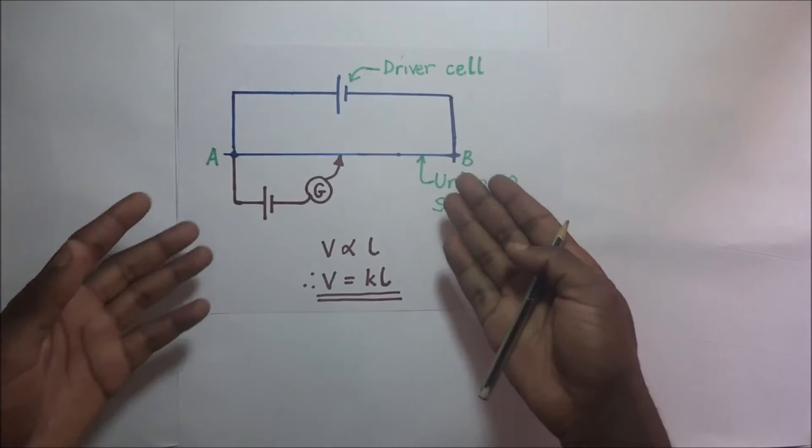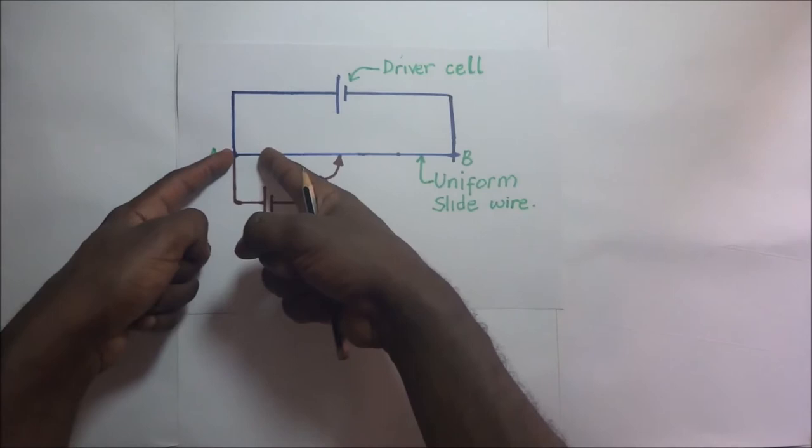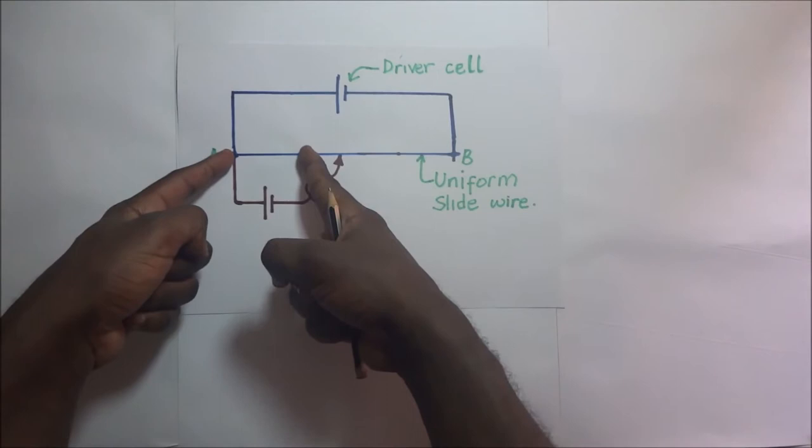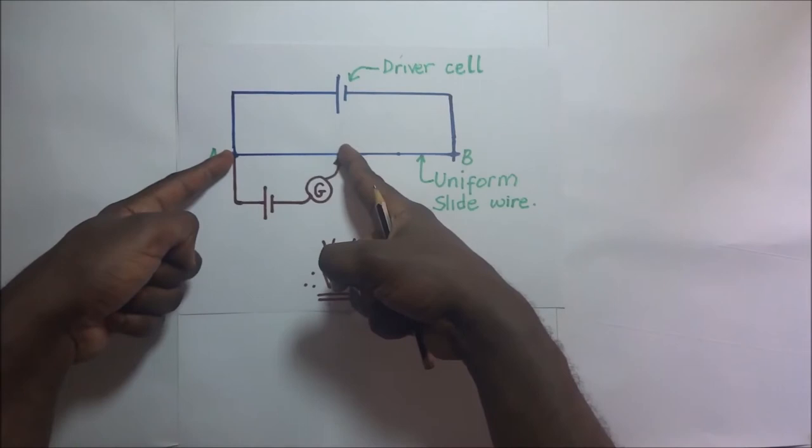So it means that every time you move, let's say one centimeter, the potential difference will be, let's say, one volt. If I move two centimeters, it means the potential difference across that portion of the two centimeter wire will be two volts. If I move three centimeters, it means that the potential difference across that portion of the wire will be three volts. So what does this mean?